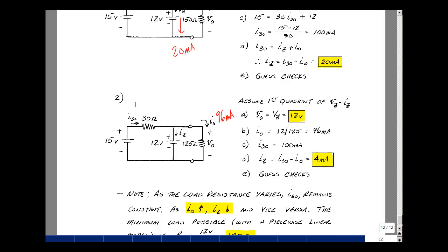Now the voltage across this resistor hasn't changed. Let's go around the loop again. 15 volts equals this drop plus this drop, so we still have the same value. That's 3 volts divided by 30 ohms, or 100 milliamps. Now the current in here is only 4 milliamps, so the guess checks.